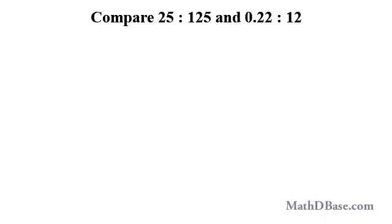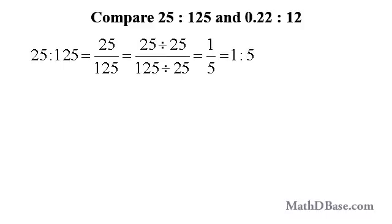To make it easier to compare two or more ratios, rewrite them so that their first terms — the antecedents — are the same. Let's compare the ratios 25 to 125 and 0.22 to 12. Rewrite both ratios so that their first terms are 1. Dividing both terms by the first in each ratio, 25 to 125 equals 25 over 125, and dividing top and bottom by 25 gives 1 over 5, or the ratio 1 to 5.